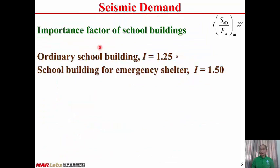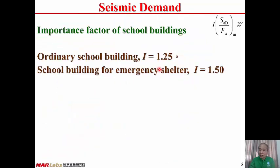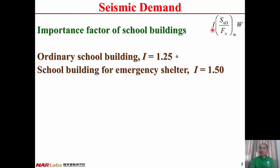For school buildings, if it is an ordinary school building — since it is used by the public with higher occupant density — I = 1.25, classified as Category 3. If a school building is used as an emergency shelter just after an earthquake, then I = 1.50. So from the seismic demand perspective, we have already considered the importance factor I.